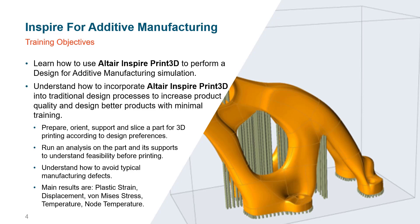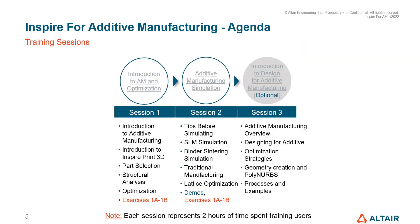In this training we are going to understand preparing, orienting, creating supports, and slicing parts for 3D printing according to design preferences. We will also discuss displacement and stresses during printing and springback stages. Session 1 includes an introduction to additive manufacturing, introduction to Inspire Print 3D as a tool, part selection, structural analysis, optimization, and a few exercises.